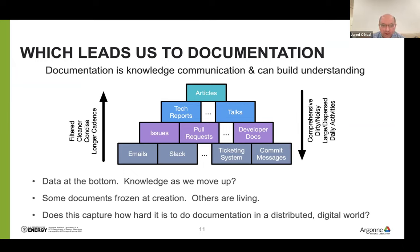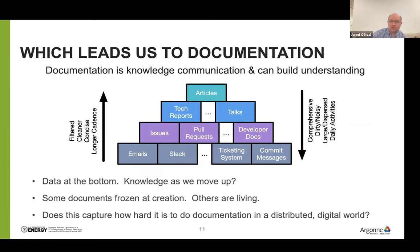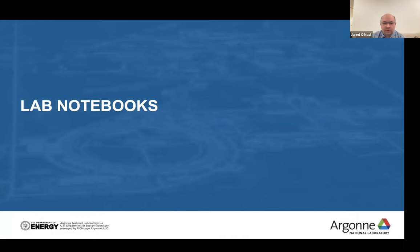Documentation can differ in other ways because some documents are frozen at creation — emails and commit messages are examples of that. Other documents are living — a developer doc is an example. When we start on a project, we can write a developer doc based on what we're expecting to happen, but as the project evolves, as people come and go, as our understanding of how we want to work together changes, we should keep that developer document up to date. One of the things I also learned from thinking about this documentation hierarchy is that it really does seem very difficult to do documentation in a distributed and digital world.